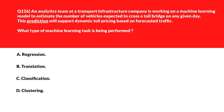Now let's look at this question about prediction and forecasting. Option A is Regression — regression deals with predicting continuous values like the number of vehicles — let's keep this. Option B is Translation — translation deals with converting one language into another, not estimating quantities, so it's incorrect.